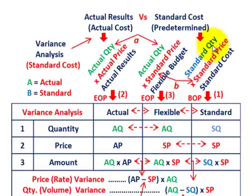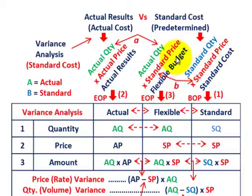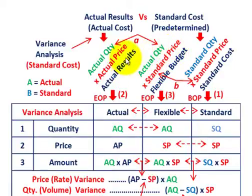For our standard, that's going to be some standard quantity times some standard price — that equals your standard cost. For the actual results, that would be actual quantity of material, labor, and overhead used times the actual price for each of those: actual quantity times actual price equals your actual results. Now we can determine our flexible budgeted amount, which is the actual quantity for the period times the standard price. Actual quantity comes from actual results; standard price comes from standard costing. So actual quantity times standard price is our flexible budgeted amount.